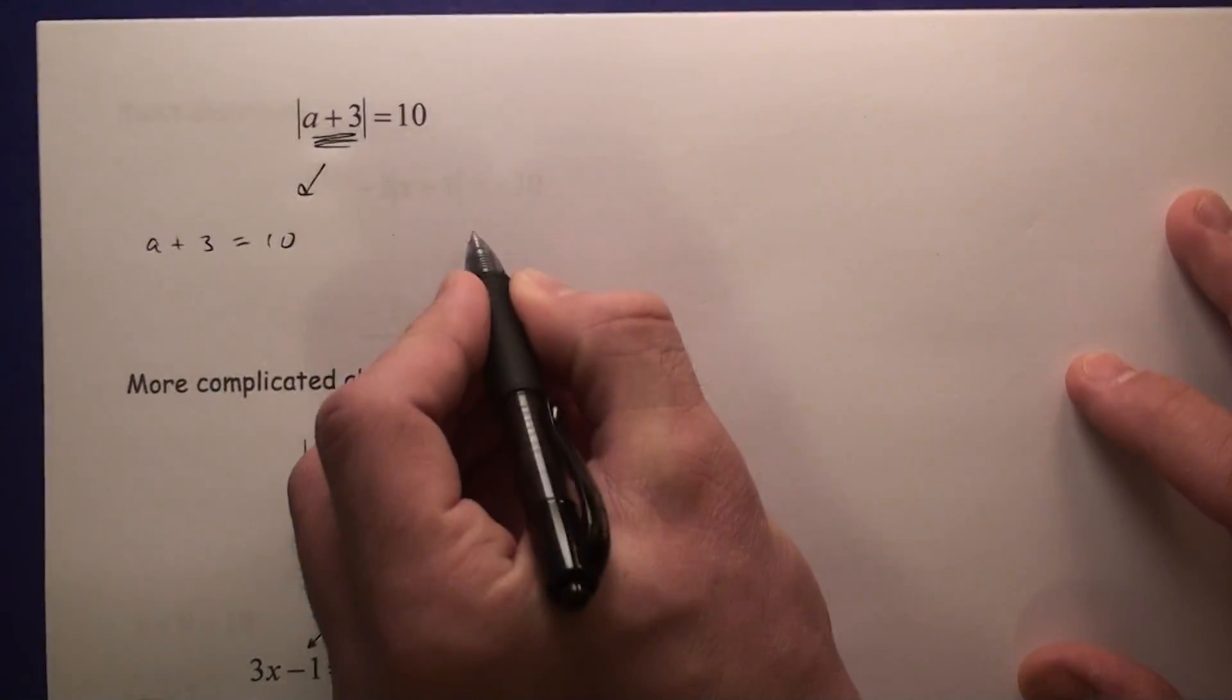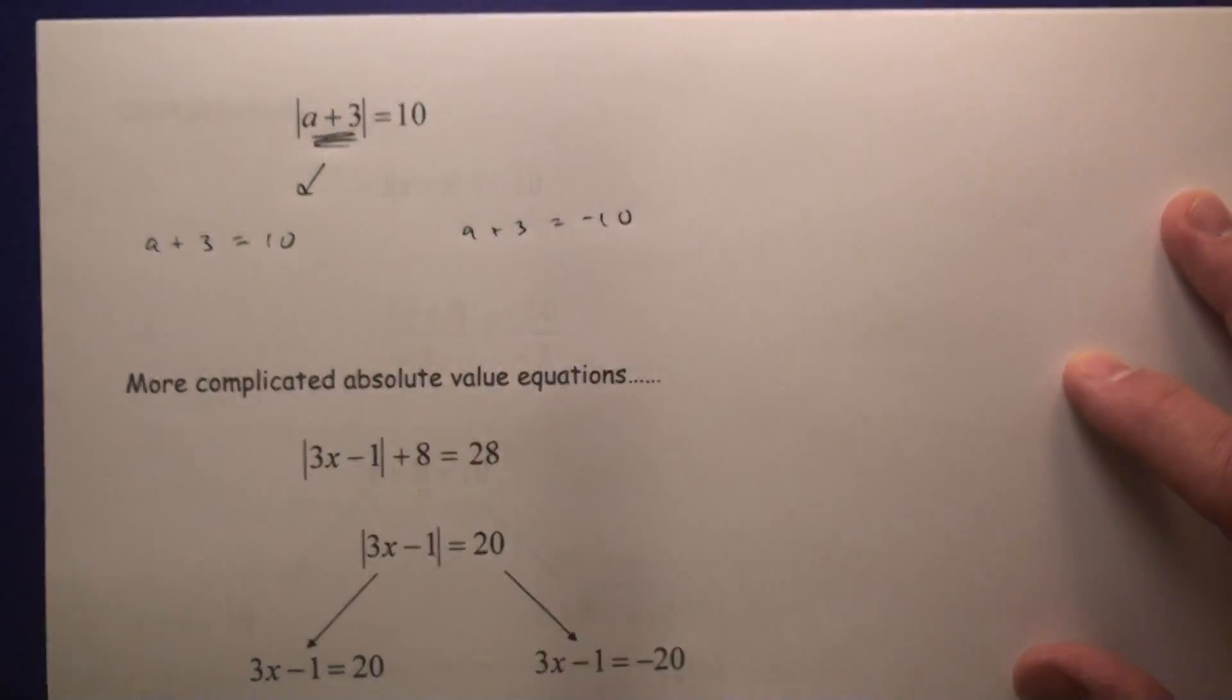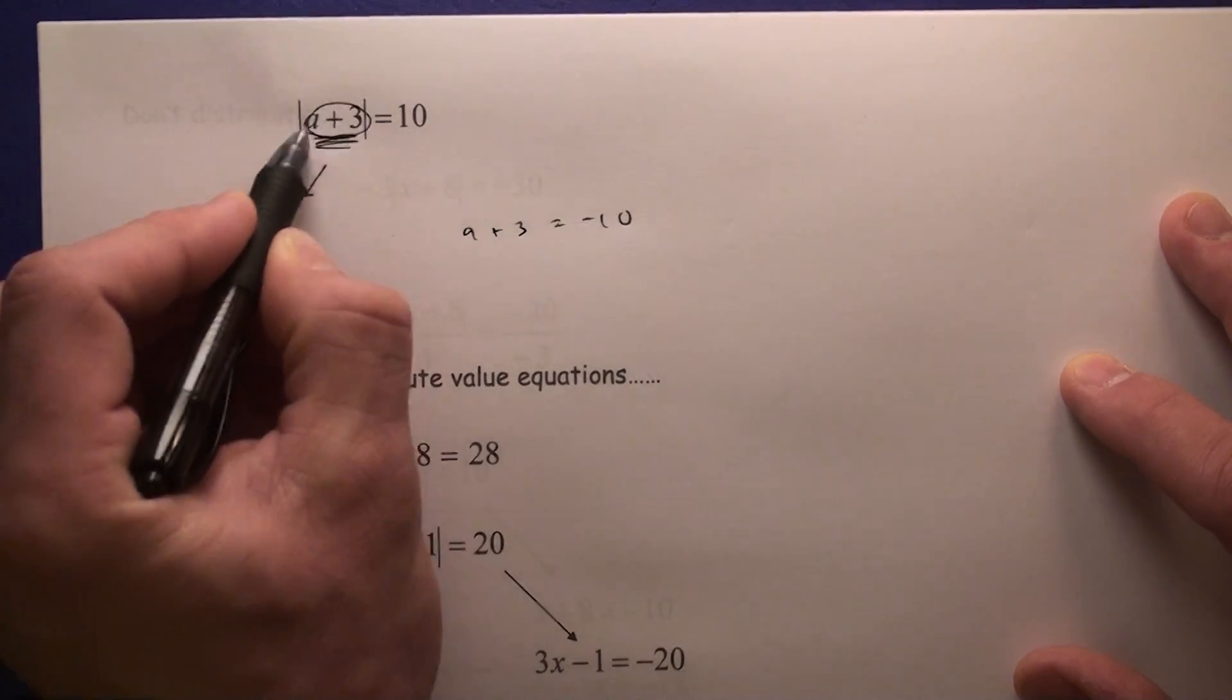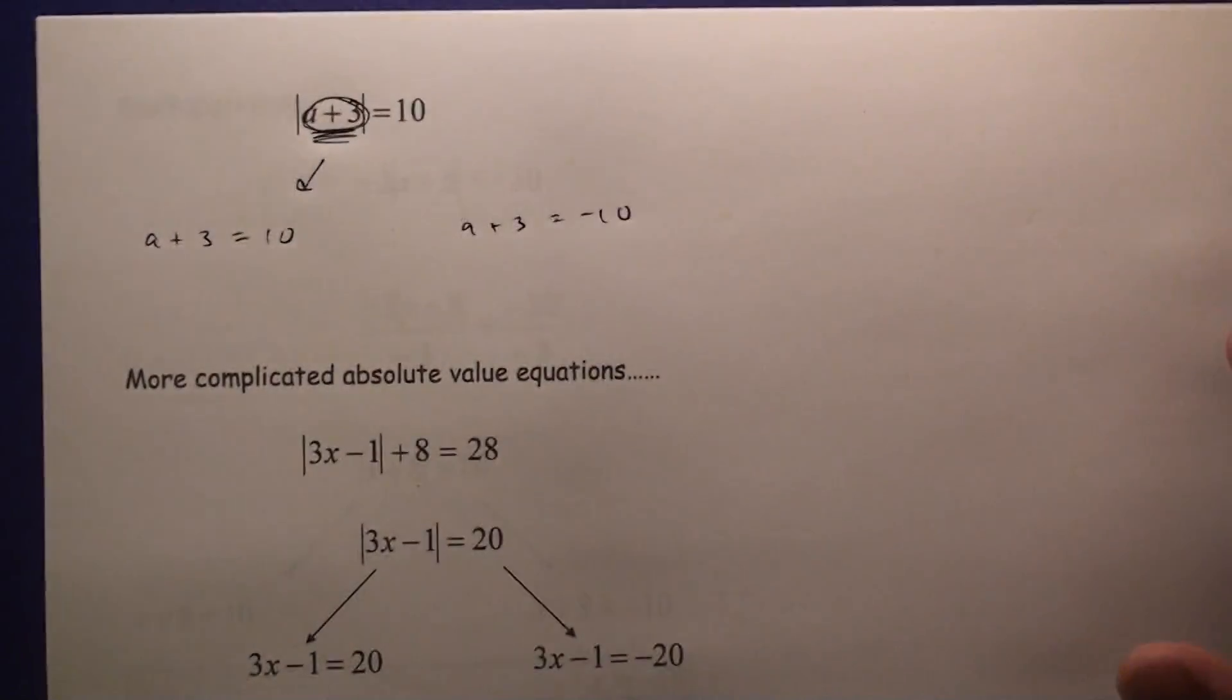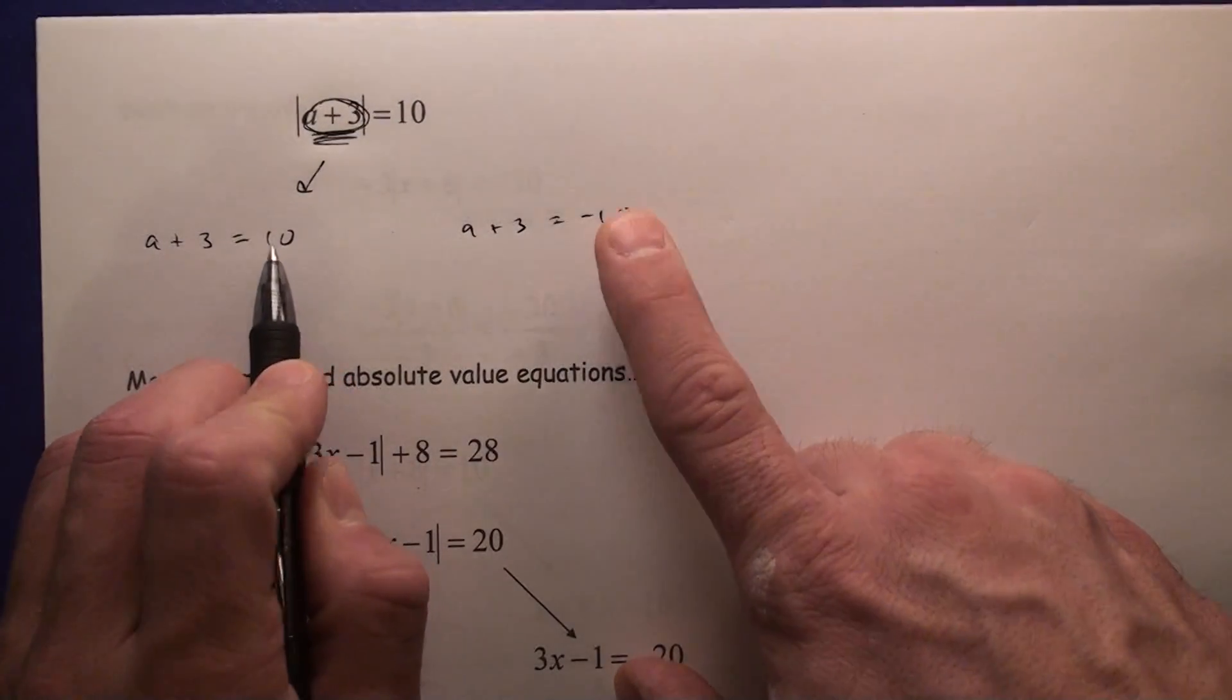...or some number plus 3 is going to equal negative 10, because we are saying that there's a sum that's 10 away from zero. Well, there's two spots that are 10 away from zero: 10 or negative 10.